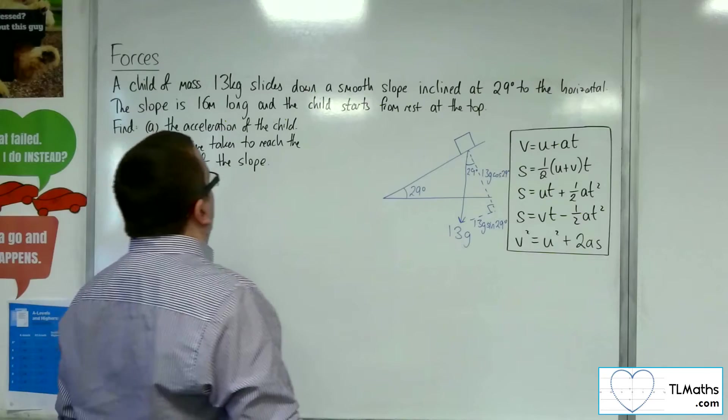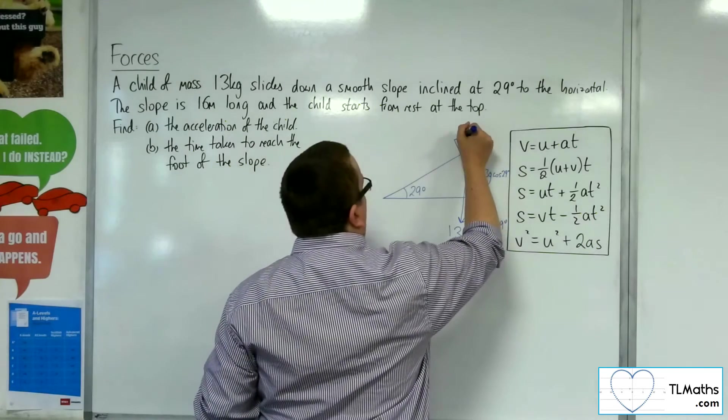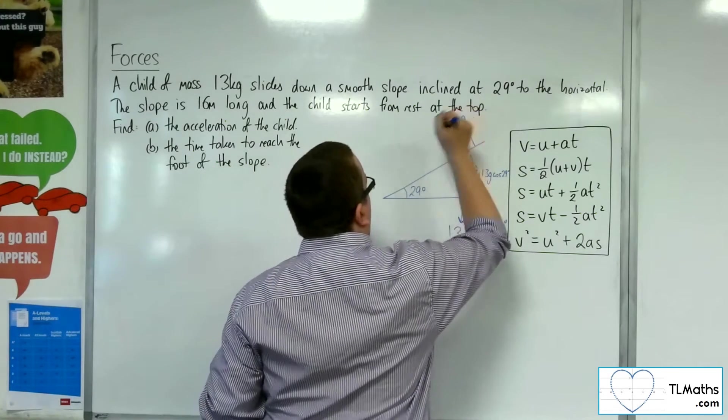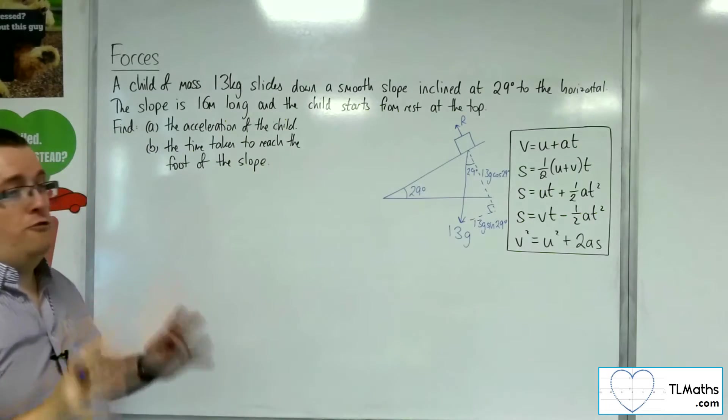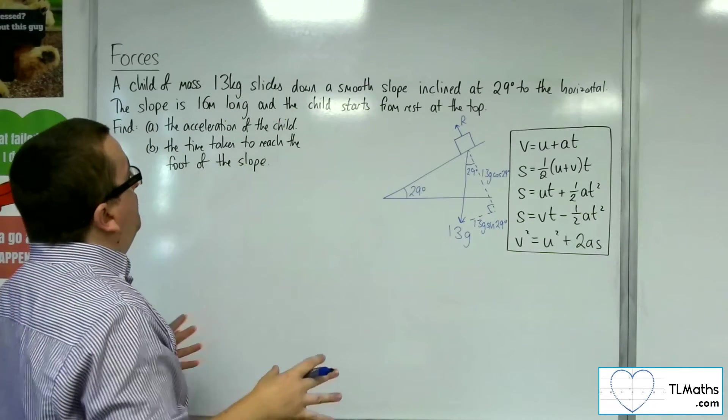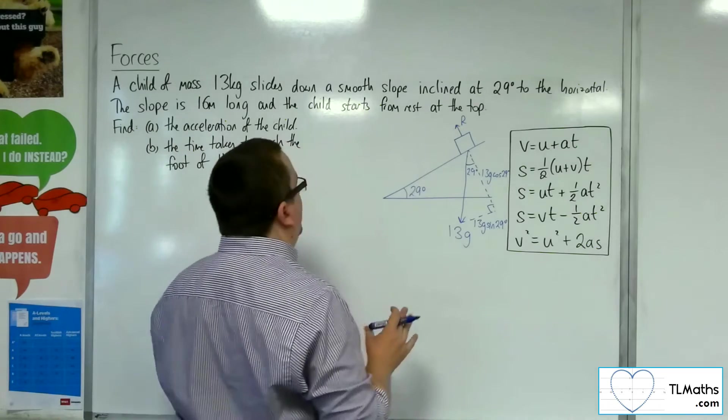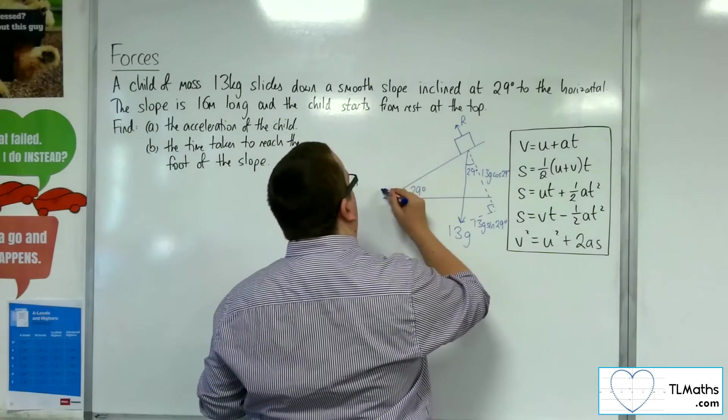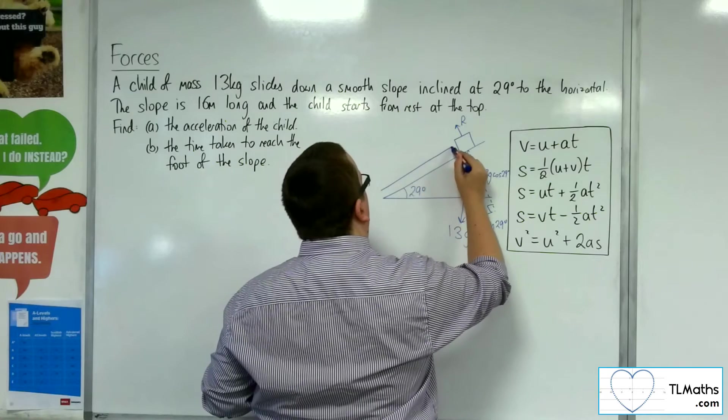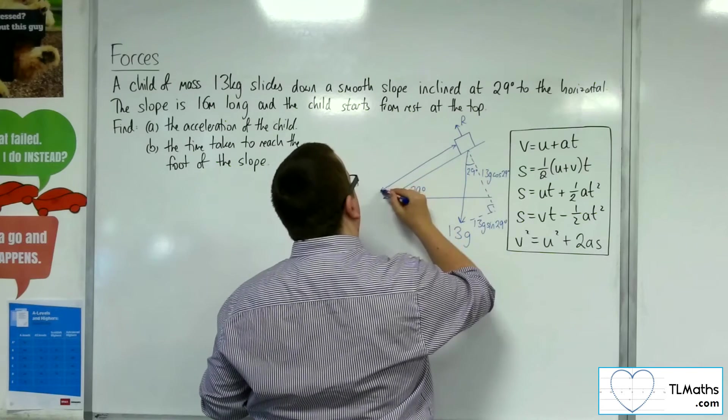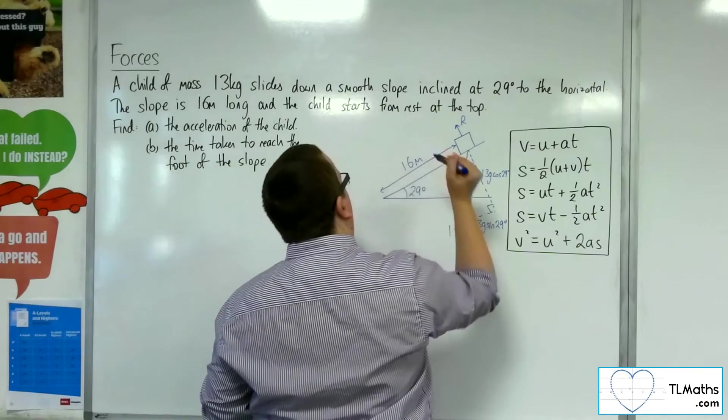Now, we've also got the normal reaction force R that works perpendicular to the plane. There's no friction, because the slope is smooth. We know that the slope is 16 meters long.